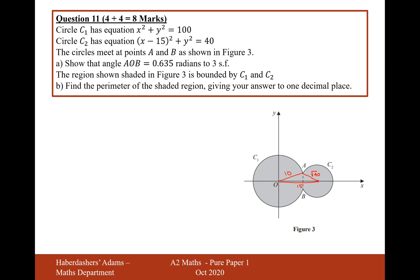We're looking to work out the angle AOB, which is this angle at the bottom here. In total it's 0.635 radians to three significant figures. I'll work out the half-angle on top and then double it afterwards. We're going to use the cosine rule: A squared equals B squared plus C squared minus 2BC cos A.